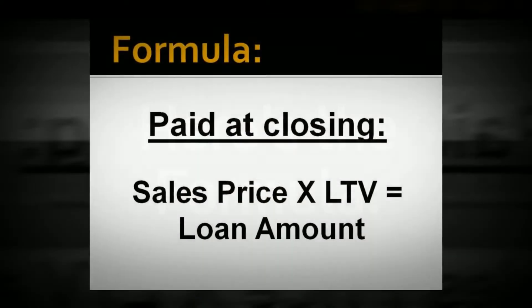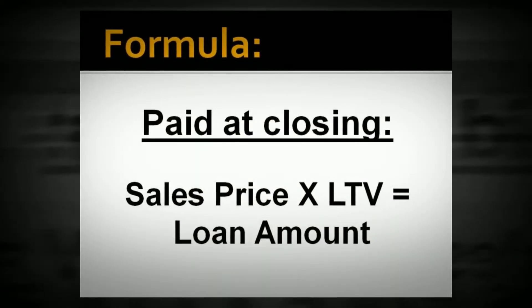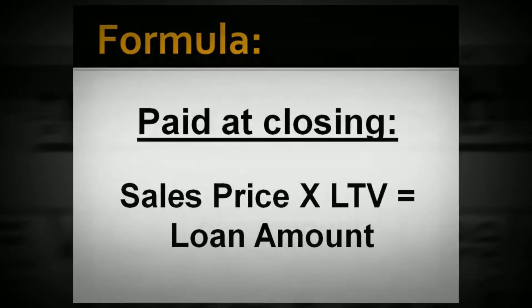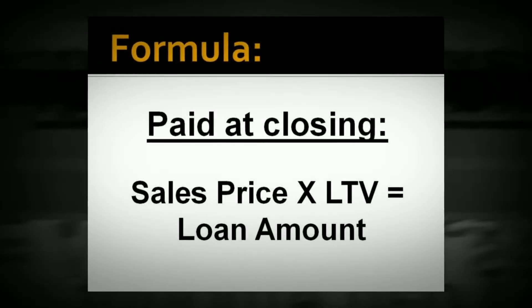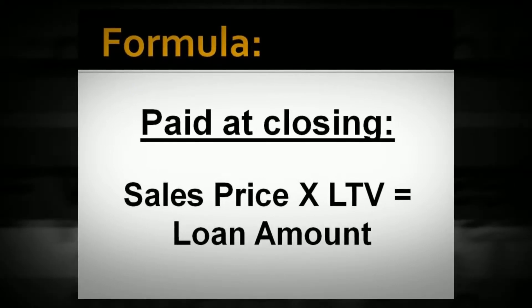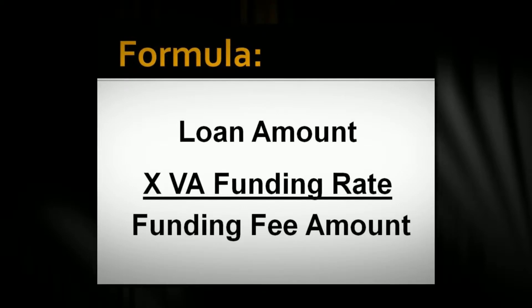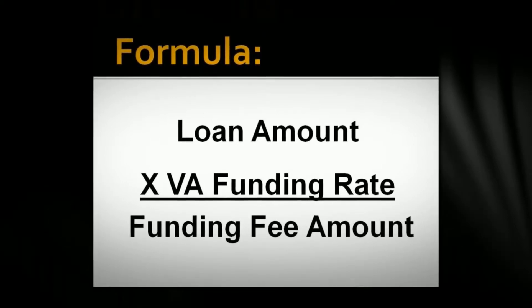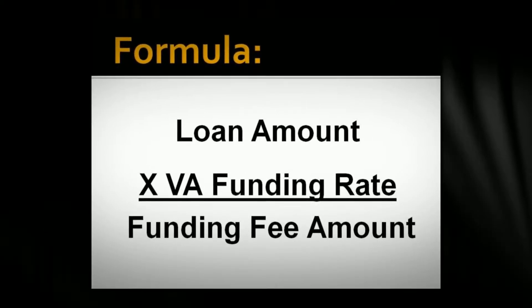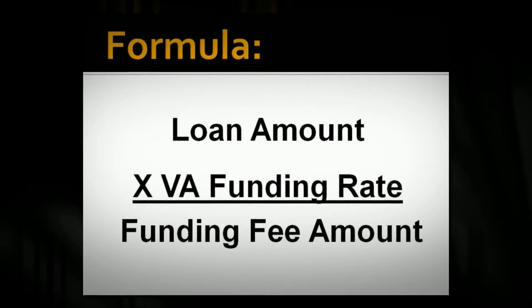Here's the formula. If it's paid at closing, you take the sales price and multiply that times the loan to value, which most of the time is going to be 100%. So the loan amount will be the same as the sales price. Once you know your loan amount, you multiply that times the VA funding fee rate, which will be given in your question, and that gives you the funding fee amount.